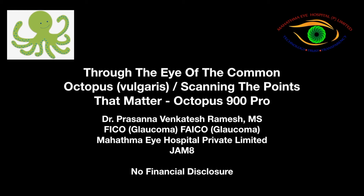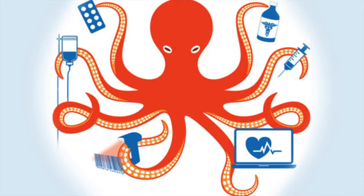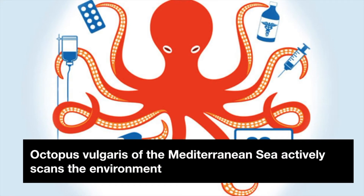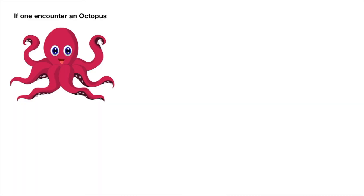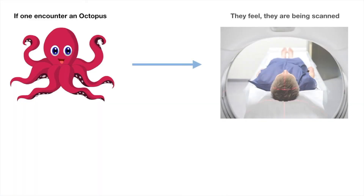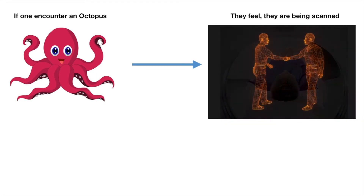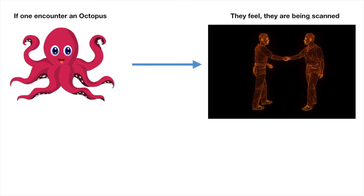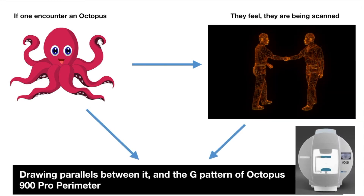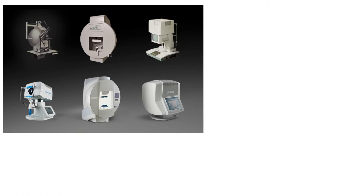Through the eye of the common Octopus vulgaris, scanning the points that matter. Octopus vulgaris actively scans its environment. If one encounters an octopus, they feel they are being scanned, drawing parallels between it and the G-pattern of Octopus 900 Pro perimeter.